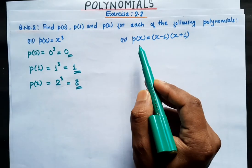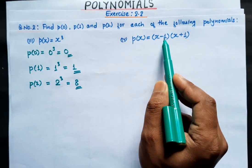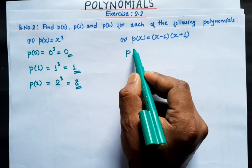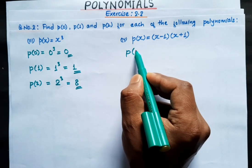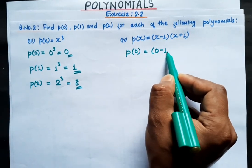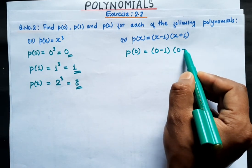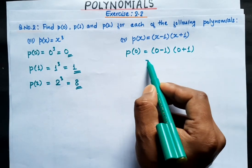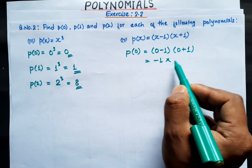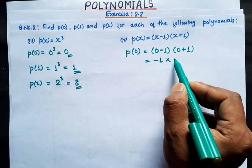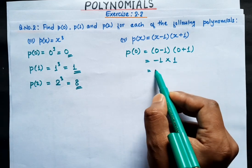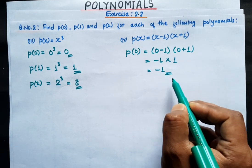Now question number 4: p(x) = (x - 1)(x + 1). For P0: put x = 0, giving (0 - 1)(0 + 1) = (-1)(1) = -1. So P0 = -1.